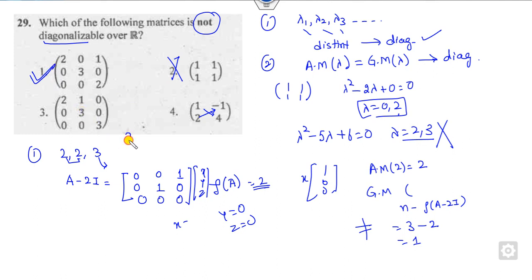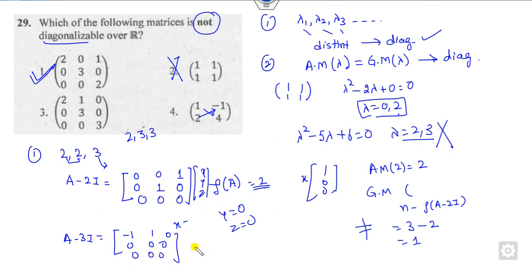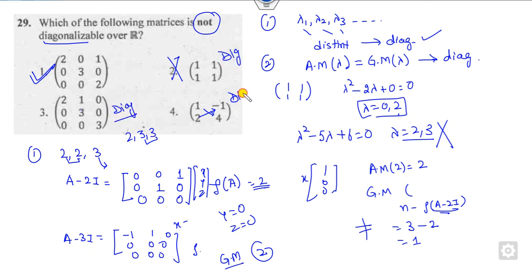For the last option, eigenvalues are 2, 3, and 3. Computing A minus 3I: rank is 1, so geometric multiplicity of eigenvalue 3 equals 3 minus 1 = 2, which equals the algebraic multiplicity of 2. So this matrix IS diagonalizable. Therefore, the correct answer is option 1 — that matrix is not diagonalizable.